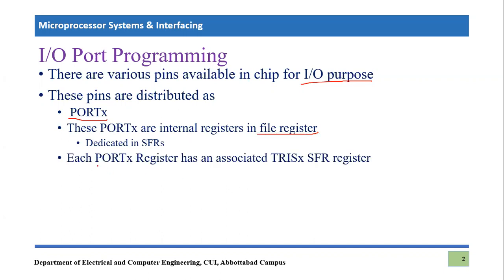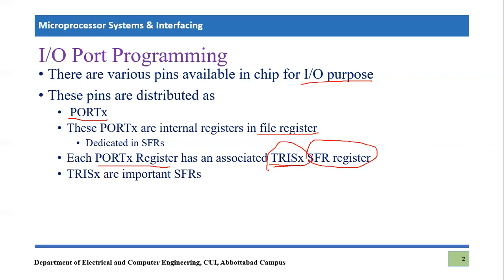Ports cannot function properly alone — they have associated TRIS-X registers, which are also part of the SFR registers. TRIS-X registers are very important SFRs because they dictate the direction of IO pins. The same pin can be used as either an input pin or an output pin, and the direction of information flow through that pin is dictated using the TRIS-X register. Direction can be inward, meaning information flows from the outer world to the microcontroller chip, or outward as an output pin delivering information to the outer world.